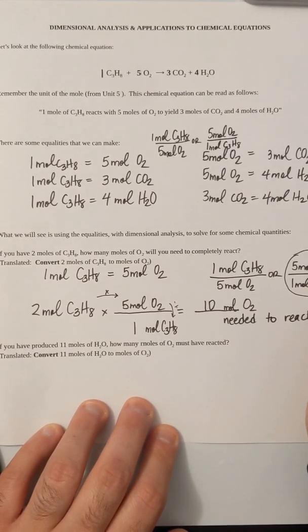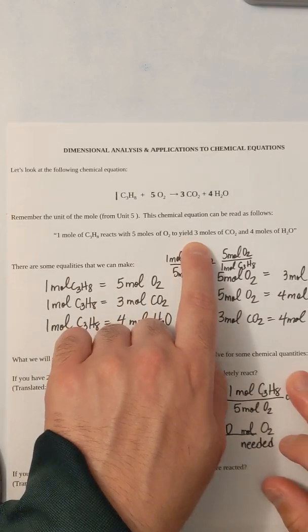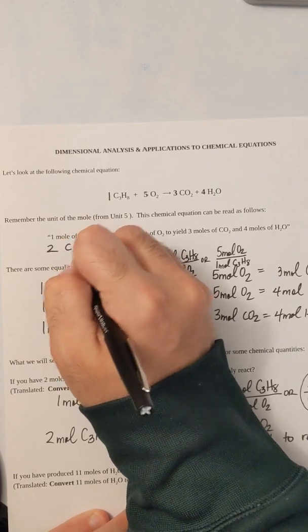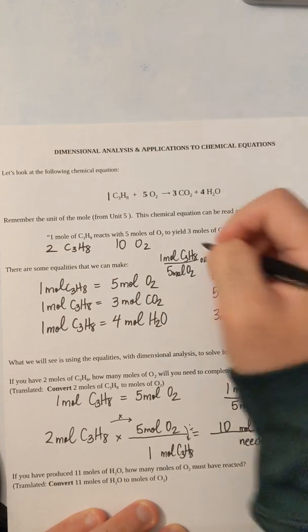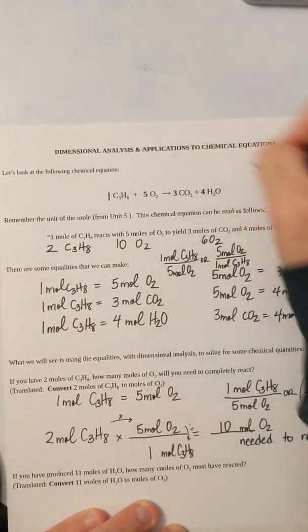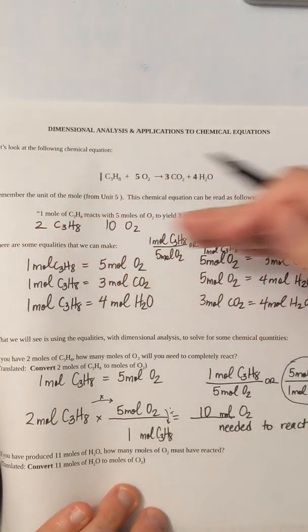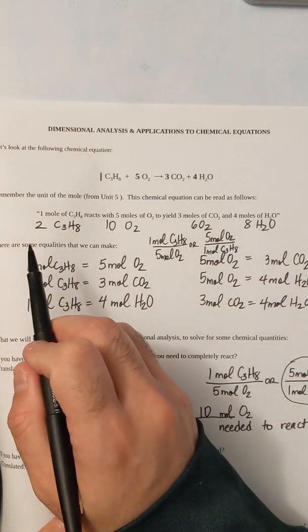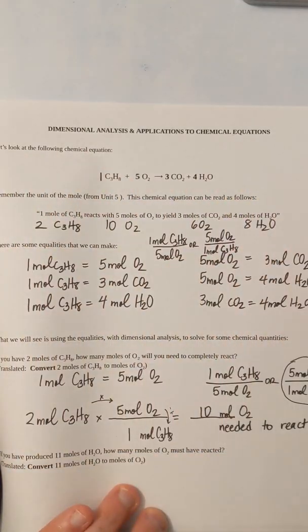And doesn't this make sense? If the equation says one mole of C3H8 reacts with five moles of O2 to yield three moles of CO2 and four moles of H2O, then if I had two moles of C3H8 I would have twice as much: 10 moles of O2, 6 moles of CO2, and 8 moles of H2O. This will always be a constant ratio — one to five to three to four, two to ten to six to eight, or even three to fifteen to nine to twelve.